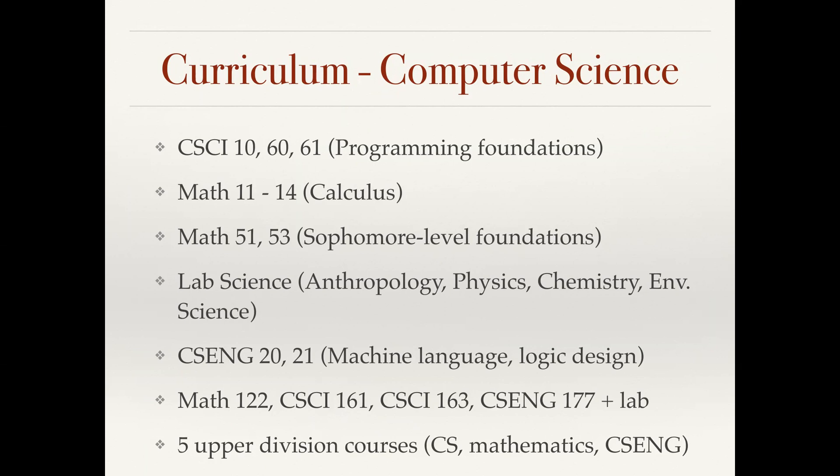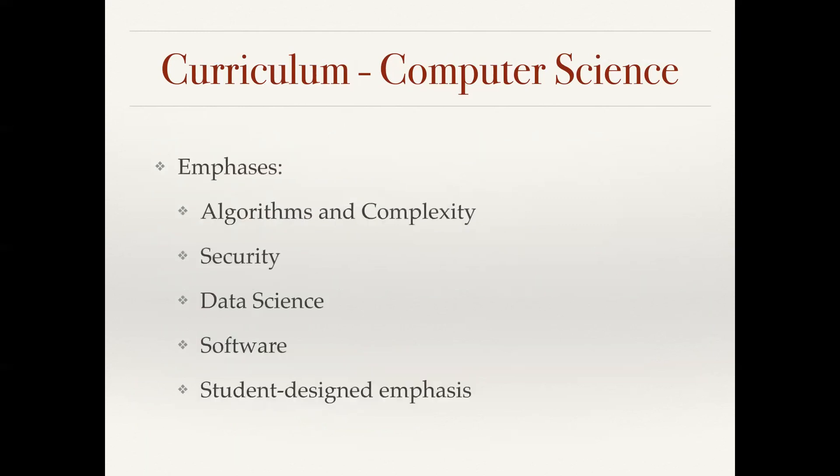And then some upper division classes: Math 122 is probability, theory of algorithms, automata theory, a class in the engineering program with the lab, and then five other upper division courses in computer science, mathematics, or computer science and engineering. We have several emphases within computer science, and this is required for a student. We have one in algorithms and complexity, security, data science, software, and then a student-designed emphasis.